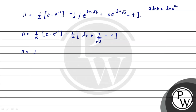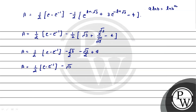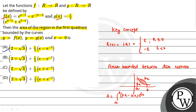So A = (1/2)(e - e^(-1)) + (-√3 + 2) = (1/2)(e - e^(-1)) + 2 - √3. Therefore A = 2 - √3 + (1/2)(e - e^(-1)). So our answer is correct and option A is correct.